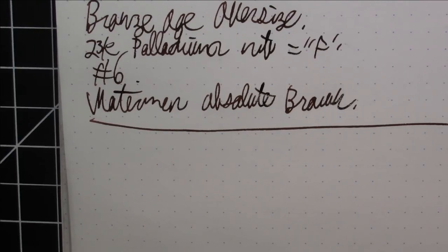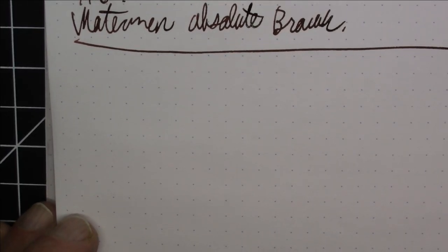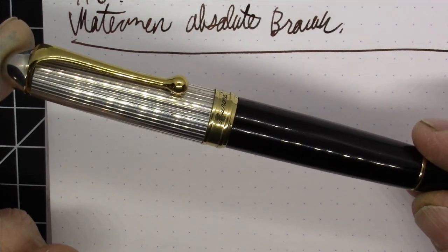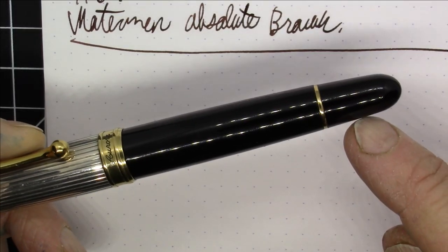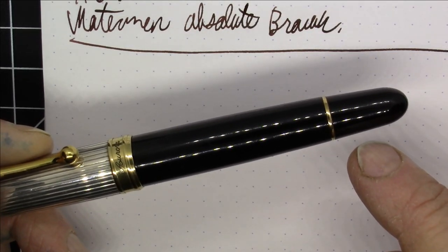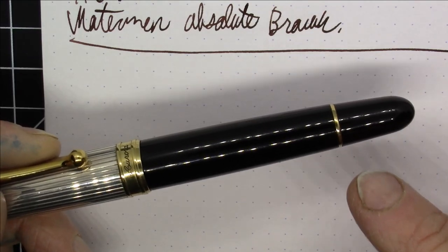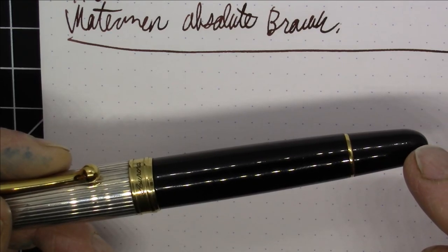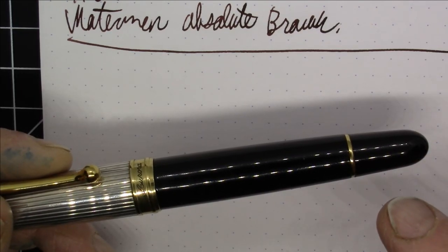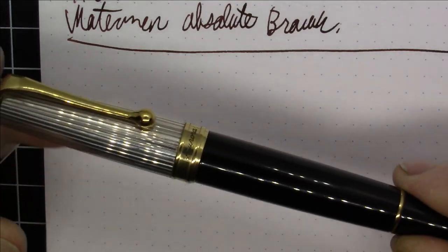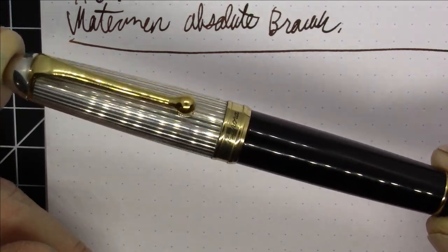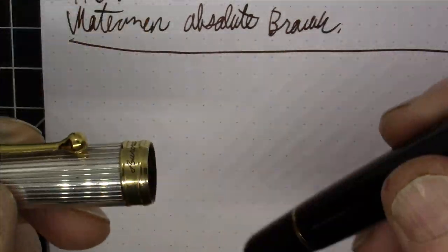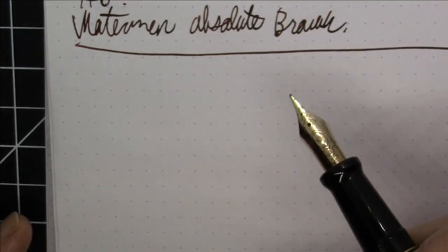Next up is a pen that I really like, but I didn't have for most of 2019. This was in the shop. This is an Aurora 88. I broke the piston turning knob by dropping it in the summer of 2019. Had to send it back to Italy. It was pretty much the whole second half of 2019 in the shop in Italy. I got it back around November or December, late November I think of 2019. So I didn't have this for a good chunk of 2019, but it is back home where it belongs. And I really like it.